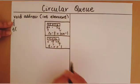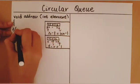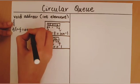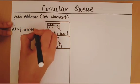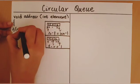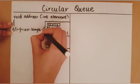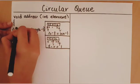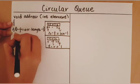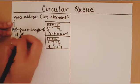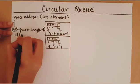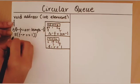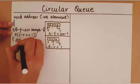With these two conditions in mind, let's write our program. If rear minus front is equal to array.length minus one, or front minus rear is equal to one, then the queue is full.